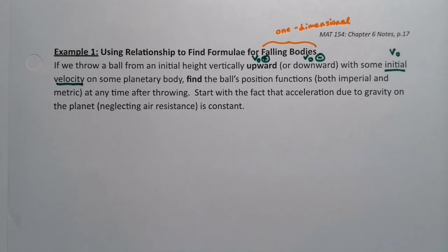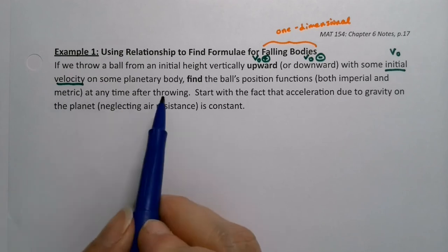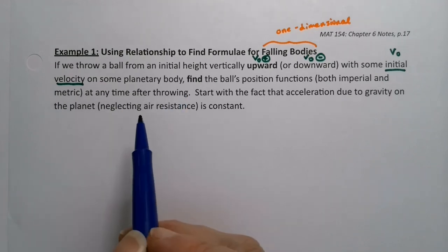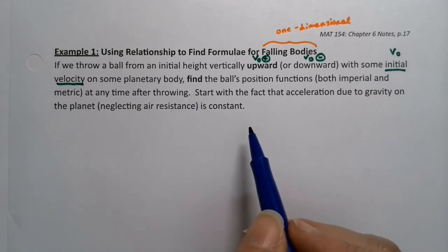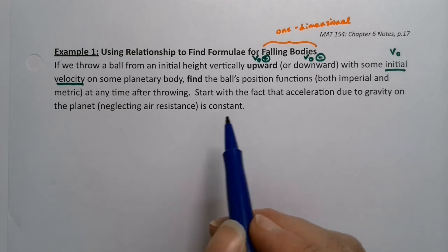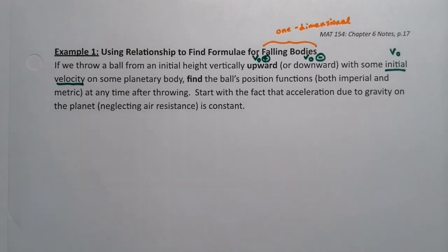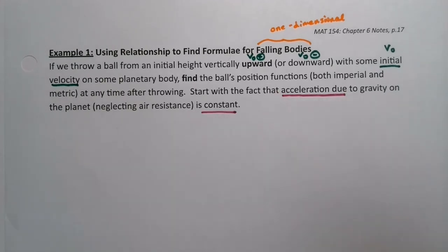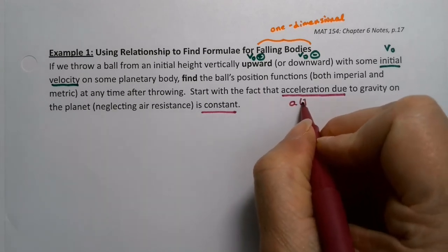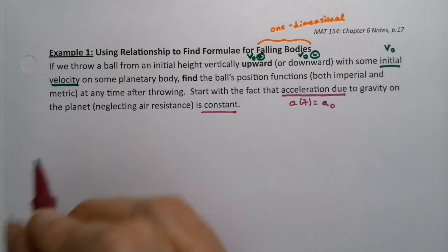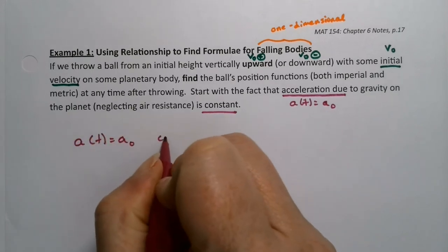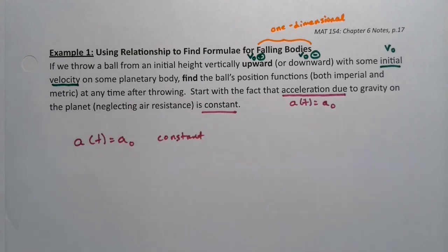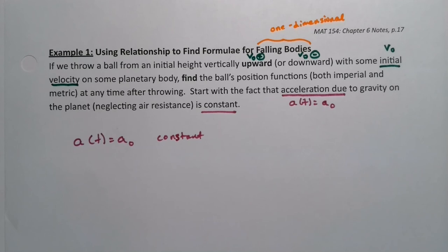We're going to find the ball's position both in imperial and metric units at any time after throwing. The initial position is s₀. We assume acceleration due to gravity on this planet is constant, neglecting air resistance — that's as far as we can tell how gravity works. So if acceleration due to gravity is constant, that means a(t) is equal to some constant a₀.